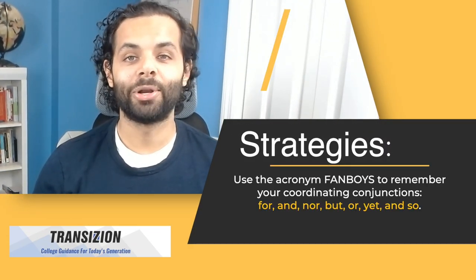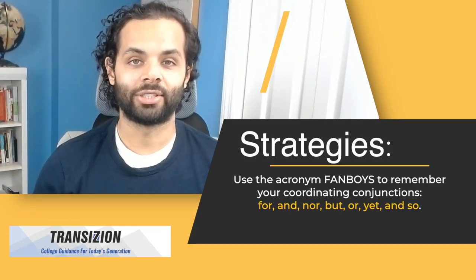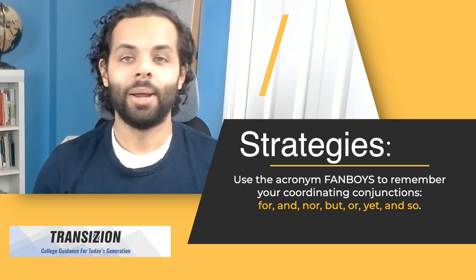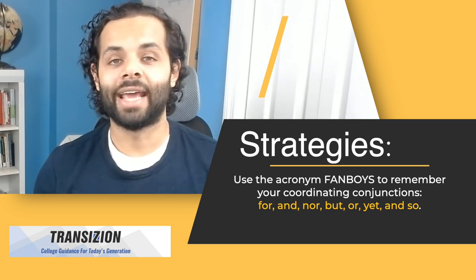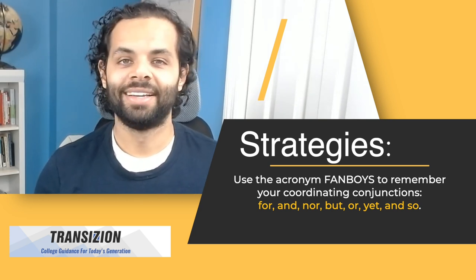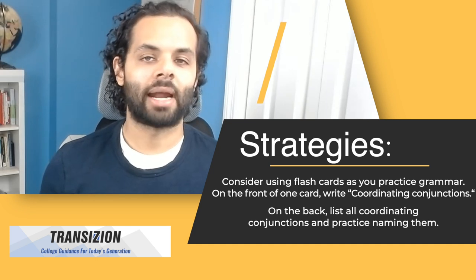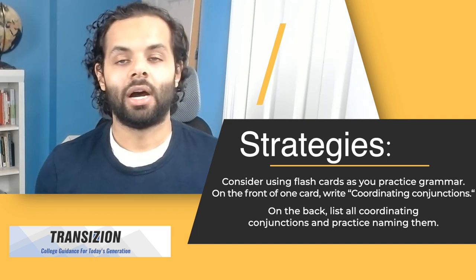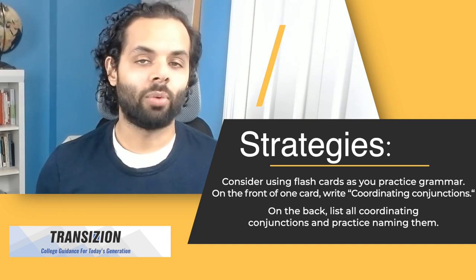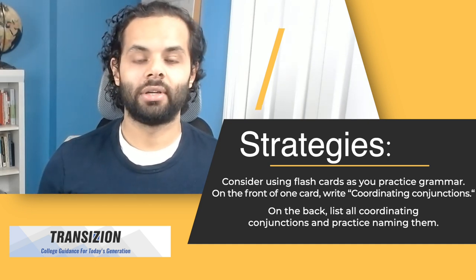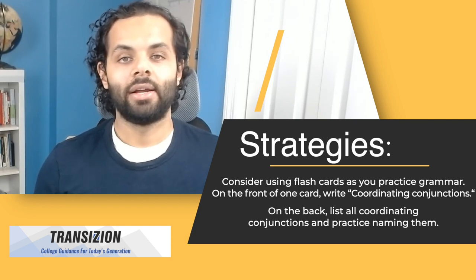Here are some strategies: use the acronym FANBOYS to remember your coordinating conjunctions — For, And, Nor, But, Or, Yet, So. Consider using flashcards as you practice grammar. On the front of one card write 'coordinating conjunctions,' and on the back list all the coordinating conjunctions and practice naming them.